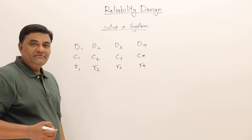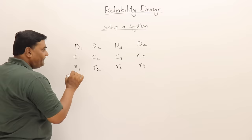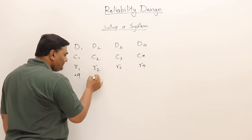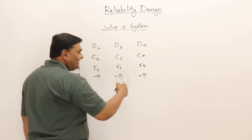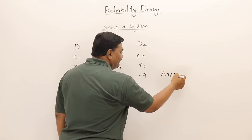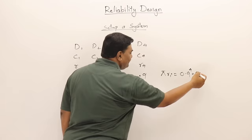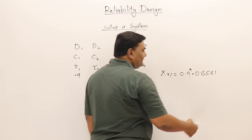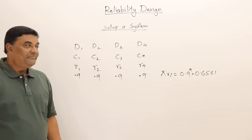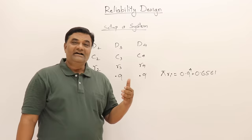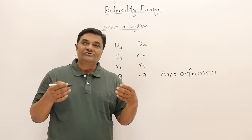The reliability of each device may vary. Suppose the reliability of each device is 0.9. The reliability of the entire system is the product of all reliabilities, so it is 0.9 to the power 4, which equals 0.6561. Even though each device has reliability 0.9, the system reliability is only 0.65, meaning there is a 35% chance the system may fail.